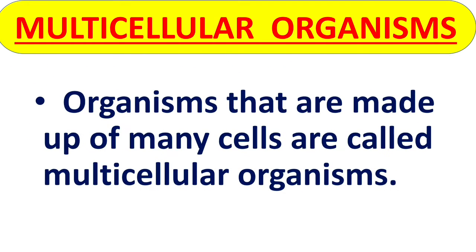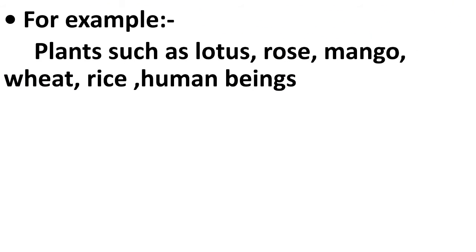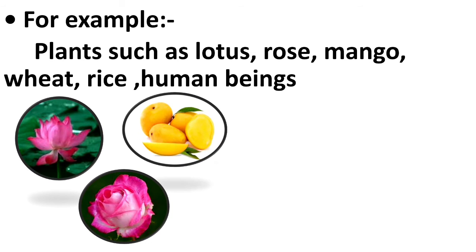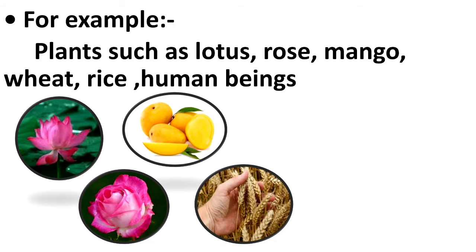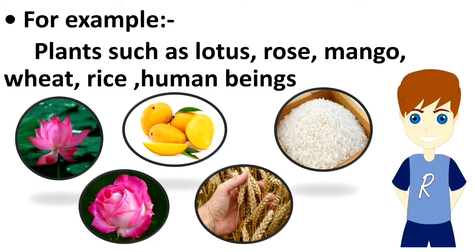Organisms that are made up of many cells — more than one cell — are called multicellular organisms. For example, plants such as lotus, rose, mango, wheat, rice, and even human beings. All these organisms are multicellular.